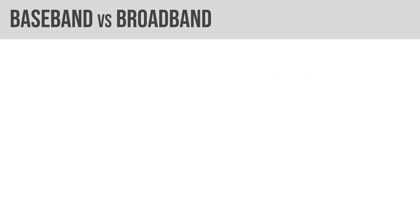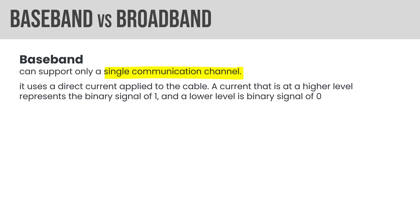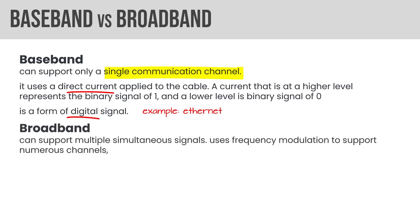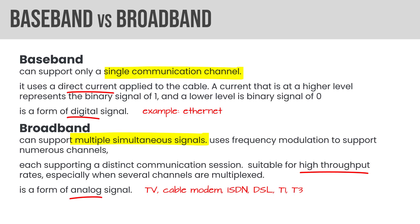Baseband versus broadband: baseband can support only a single communication channel. It uses direct current to the cable — the higher level represents binary one, the lower is binary zero, so it's digital. A good example is Ethernet. Broadband can support multiple simultaneous signals, using frequency modulation to support numerous channels, each supporting a distinct communication session. It's suitable for high throughput rates, especially when you multiplex. Broadband is a form of analog signal. So baseband is digital, broadband is analog. Good examples of broadband include cable modems, ISDN, and DSL.